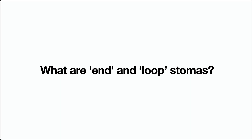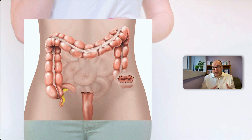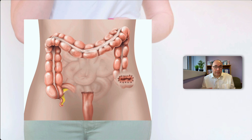Next up: what are end and loop stomas? An end stoma, as the name suggests, is just an end of a piece of bowel that is brought to the skin and fashioned into a stoma. Whereas a loop stoma is essentially a loop of bowel which is not cut in half — the continuity of the bowel is not disrupted. A hole is created with one end being the proximal end and the other being the distal end, and that's brought to the skin.